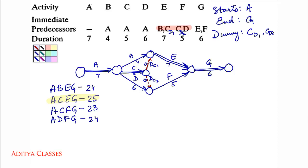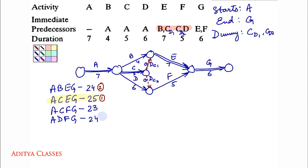Our next step is to make a forward pass and a backward pass on all possible paths, but we will follow a priority starting with the longest one first. So first we go on A, C, E, G; then the two paths of duration 24; and last the path of duration 23.